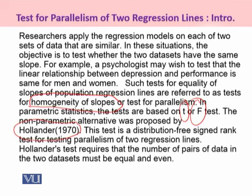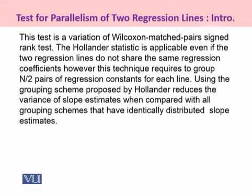The Hollander test requires that the number of pairs of data in the two data sets must be equal and even. In case the two data sets are not equal or not even, we would have to make them even or equal by randomly discarding observations from the sample showing the greater number of observations. This test is actually a variation of the Wilcoxon matched pairs signed rank test.